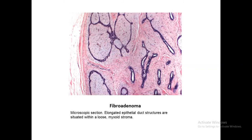Microscopically, fibroadenoma consists of two components: an epithelial component and a stromal component. The epithelial component shows ducts lined by epithelial and myoepithelial cells. There should be presence of myoepithelial cells, and this is the stroma, which is a myxoid type stroma.